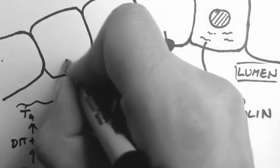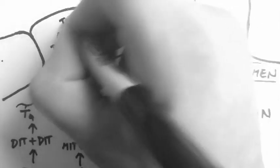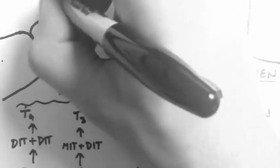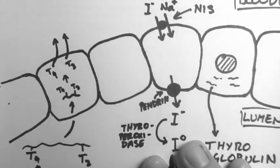The thyroglobulin then gets taken inside the follicular cells and cut up so that the T3 and T4 are just present, and they get secreted out into the bloodstream again.